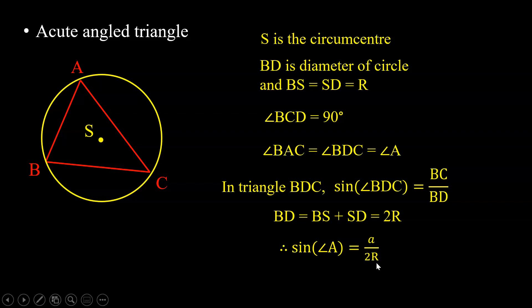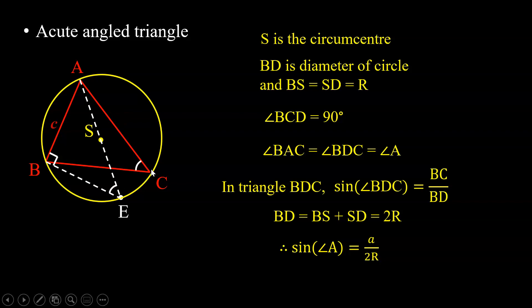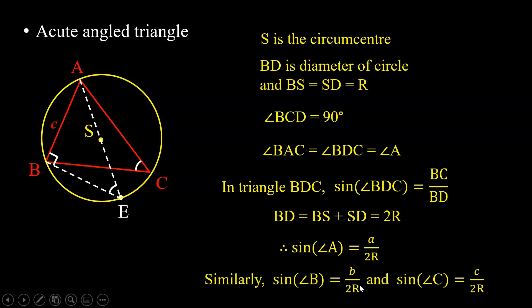We can proceed in a similar way. We draw a line passing through A and S, and let it meet the circle at E. So AE is a diameter, making the angle in the semicircle 90°. The angles are equal by angles in the same segment, giving sin B = opposite/hypotenuse = b/AE = b/2R. Similarly, sin C = c/AE = c/2R. Rearranging, we get b/sin B and c/sin C both equal to 2R.